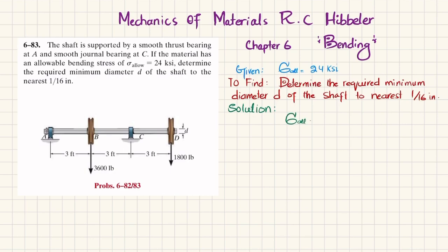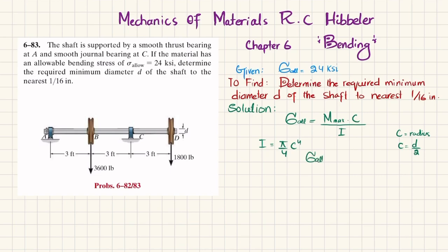We know that the allowable — or maximum — bending stress equals the maximum bending moment times c, which is the radius of the shaft, divided by I. For a circular shaft having radius c, where c equals the radius and equals d divided by 2, we know that I equals (π/4) c⁴.